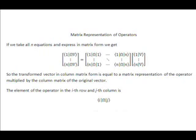When we look at the i-th row and j-th column of the matrix that we generated, it is basically just the inner product of i times the operator acting on ket j.